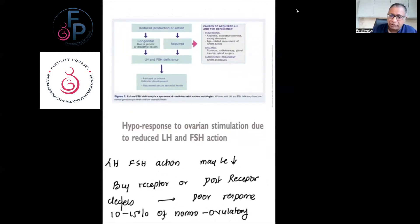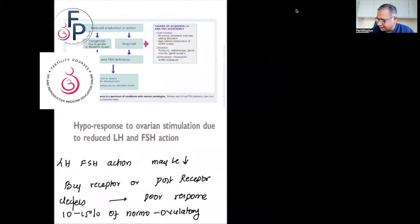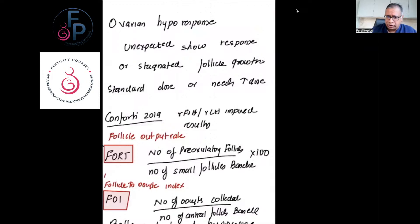If you look at hypo-response to ovarian stimulation due to reduced FSH and LH action, you're giving a good amount of FSH but there is a reduced action. Sometimes you start stimulating and you just don't see that response, even in some women with a good reserve. It may be because there could be receptor deficiencies. Some studies say that in normal ovulatory women it may be between 10 and 15%. An unexpected slow response or stagnated response—that's what you see sometimes, and the standard dose does not help or sometimes needs an increased dose. A few papers looked at using the combination of recombinant FSH and LH, and I would again query HMG, to improve results.